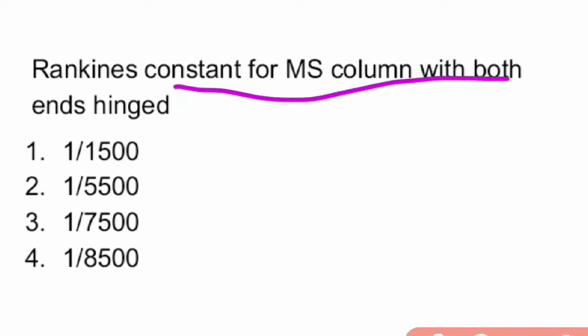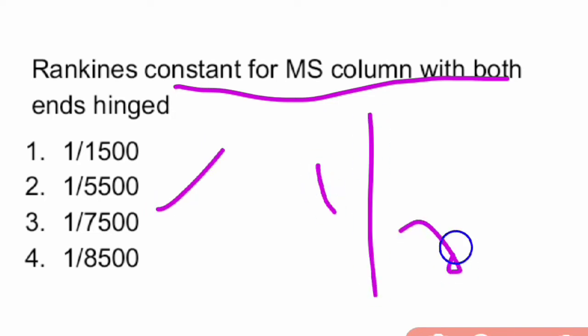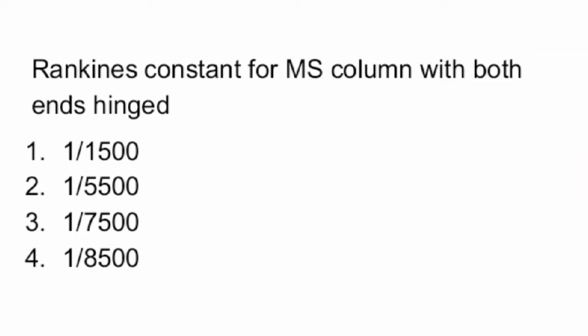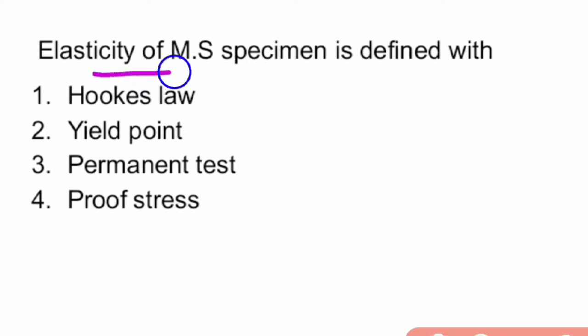Next question: Rankine's constant for a mild steel column with both ends hinged is what? The Rankine's constant for a mild steel column with both ends hinged is 1/7500.